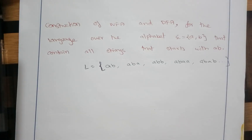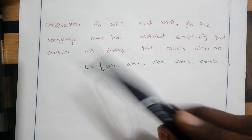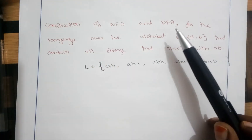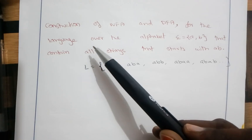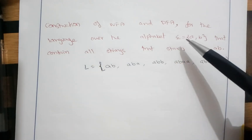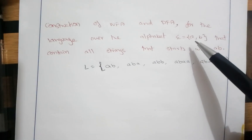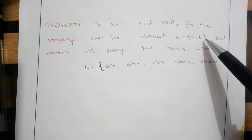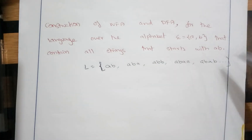Welcome back. In this video I will show you how to construct an NFA or DFA for some language over some strings. We are going to construct it for a language where the input symbols are A and B alone, and it contains all strings that start with AB.